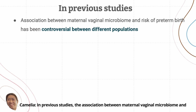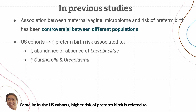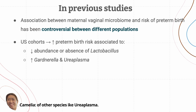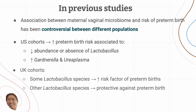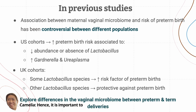In previous studies, the association between vaginal microbiome and the risk of preterm birth has been controversial between different populations. In the US cohorts, higher risk of preterm birth is related to lower abundance of lactobacillus and higher abundance of other species like Ureaplasma. In the UK cohorts, some lactobacillus species pose a risk factor while others are protective against preterm birth. Hence, it is important to explore differences in the vaginal microbiome between preterm and term deliveries.